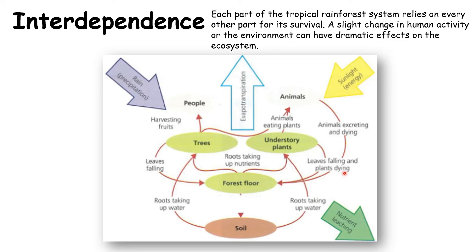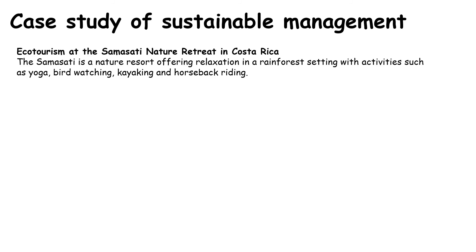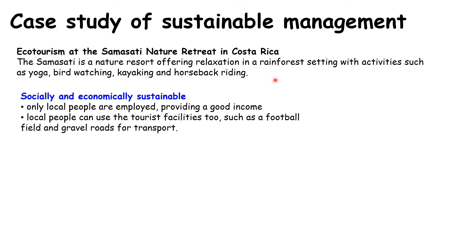Without any part of this system, the whole system wouldn't be able to exist. Finally, we're going to look at a case study of how the rainforest can be managed sustainably — the Samasati Nature Retreat in Costa Rica. It's a nature resort with hotels and accommodation offering relaxation in a rainforest setting, with activities like yoga, bird watching, kayaking and horseback riding, designed so they do not damage the environment. It's socially sustainable: local people are employed and provided a good income, and can also use tourist facilities such as a football field and the gravel roads.